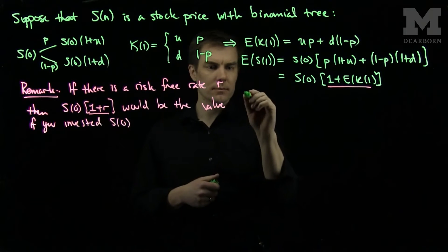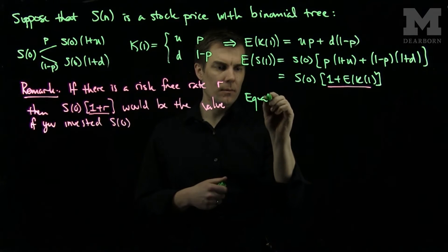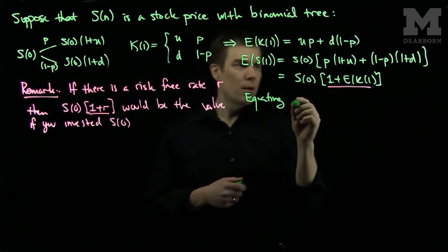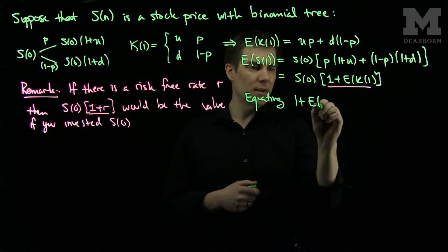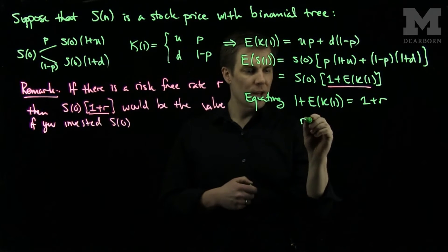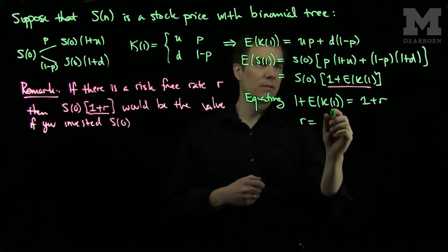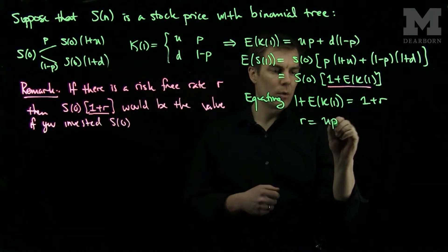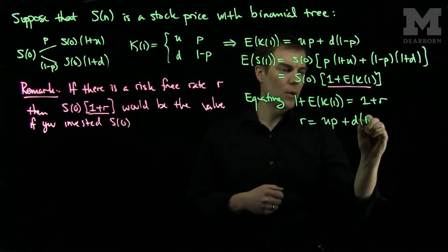equating 1+E(K_1) and 1+R, we will see that R will be equal to the expected value of K_1, or UP plus D(1-P).